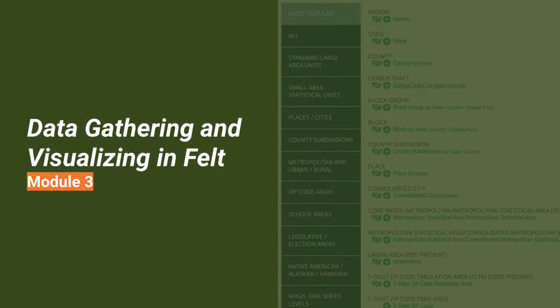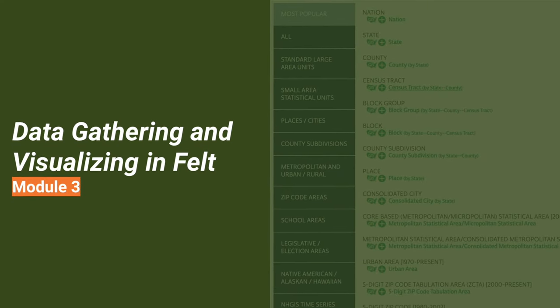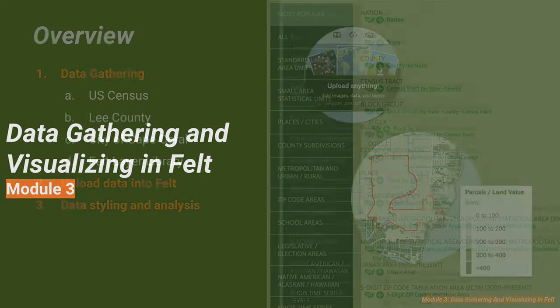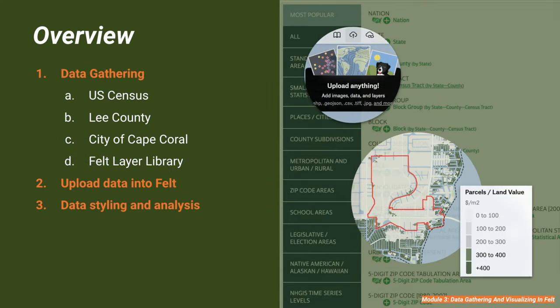In Module 3, our focus will be on data gathering — a crucial step in our analysis process. We will begin by accessing GIS data from the U.S. Census, a cornerstone source for demographic and geographic information. Next, we will gather data from Lee County, followed by the City of Cape Coral, to further enrich our understanding of the study areas.